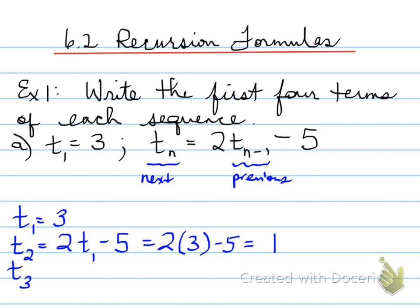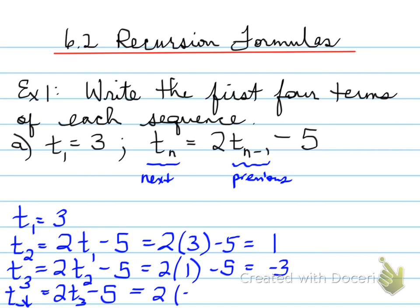To find T3, that's equal to 2 times T2 minus 5, and that's equal to 2 times 1 minus 5, and that's negative 3. To find T4, that's equal to 2 times T3 minus 5, and that gives us a value for T4 of negative 11.